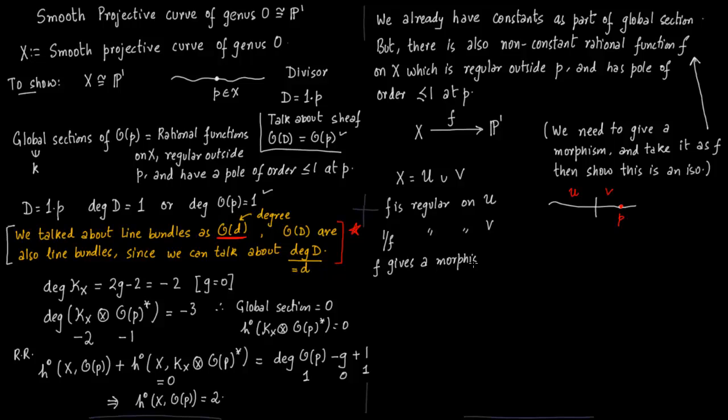So we have a morphism. f gives a morphism. Basically what it does is you take u, you take every point of u, use f for a valuation, you get a1. Similarly from v to a1 using 1 by f.